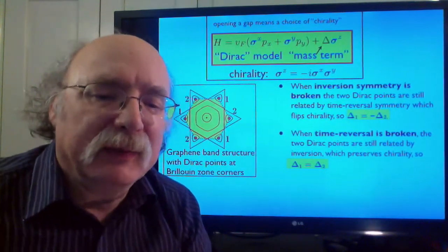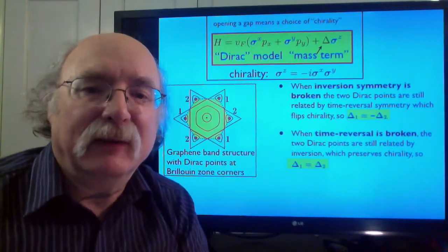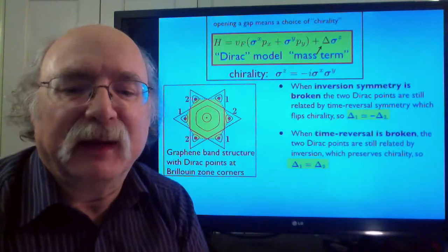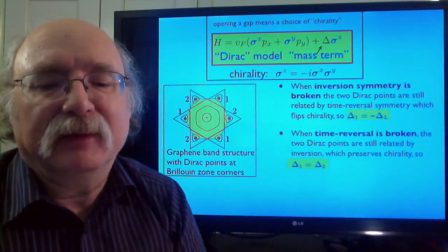But in the other case, when time reversal symmetry is broken, the two Dirac points are still related by spatial inversion symmetry, which in two dimensions preserves the handedness. And the two massive Dirac points have masses of the same sign.